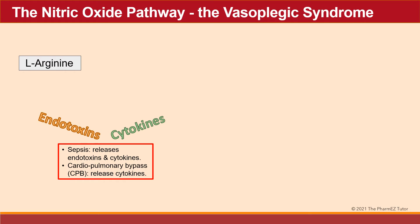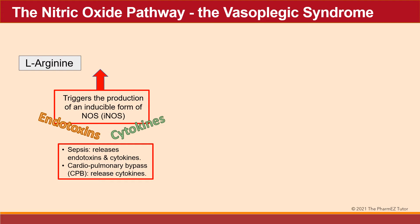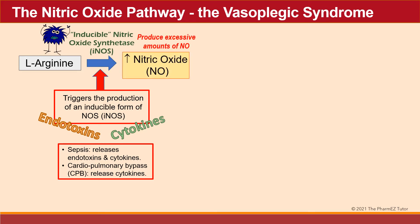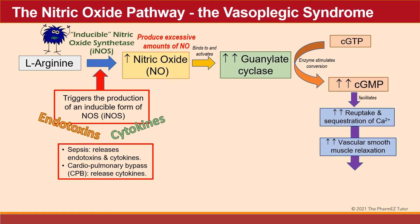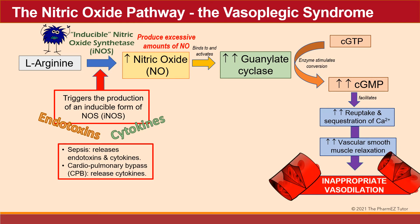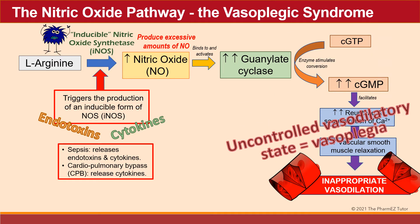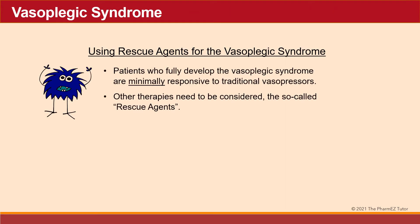In sepsis or cardiopulmonary bypass, endotoxins and cytokines can be released. This triggers the production of an inducible form of nitric oxide synthetase, iNOS. iNOS produces excessive amounts of nitric oxide, which then binds to and activates increased guanylate cyclase, increasing the production of cyclic GMP and increasing the reuptake and sequestration of calcium, leading to inappropriate vasodilation. This uncontrolled vasodilatory state is called vasoplegia. Patients who are vasoplegic are minimally responsive to traditional vasopressors, therefore other therapies — the so-called rescue agents — need to be used.